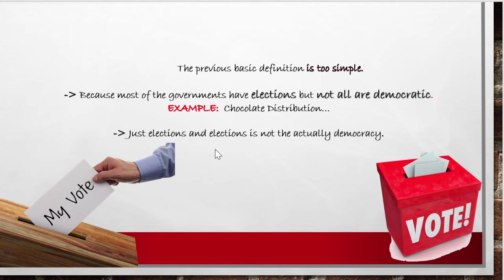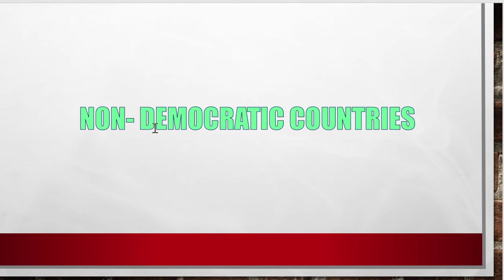The previous basic definition is too simple, because most governments have elections but not all are democratic. As I told you, democracy does not just mean people's choice of representatives. For example, China has elections every five years, but those elections do not carry any meaning to the people — it is just a way to make it appear that the country is democratic, while the same leader continues to rule. So elections carry no real meaning in those countries.